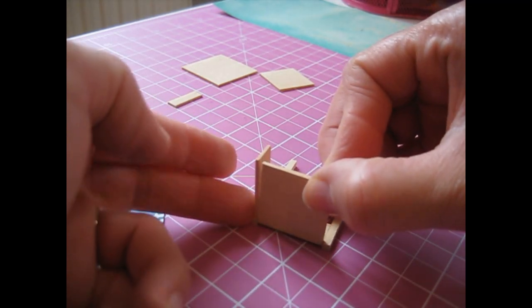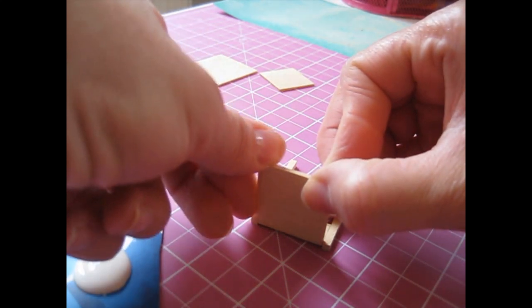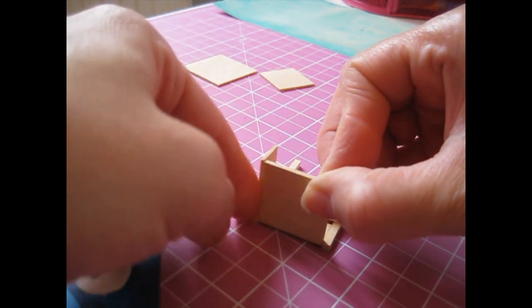Then you can pull this back piece in to meet it and that will square the whole thing up. Press it all together. Again you want that nice flush edge along the back there.